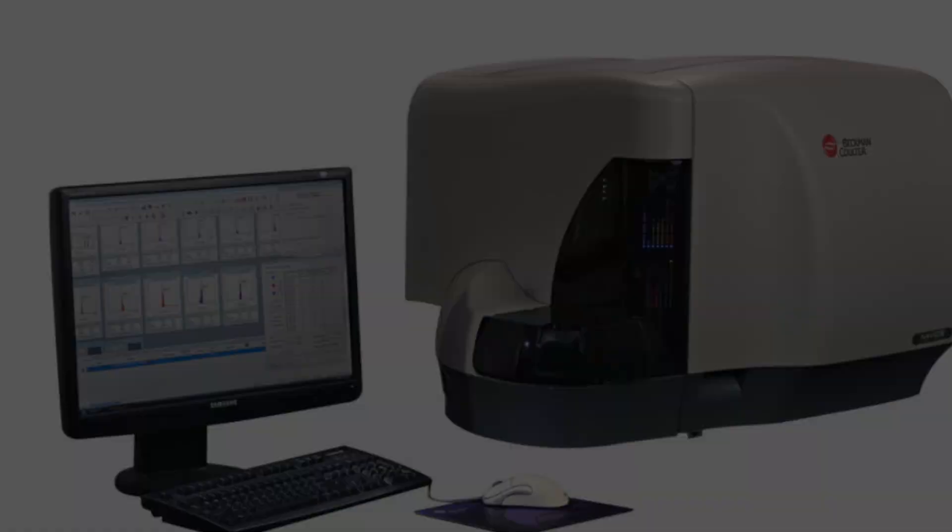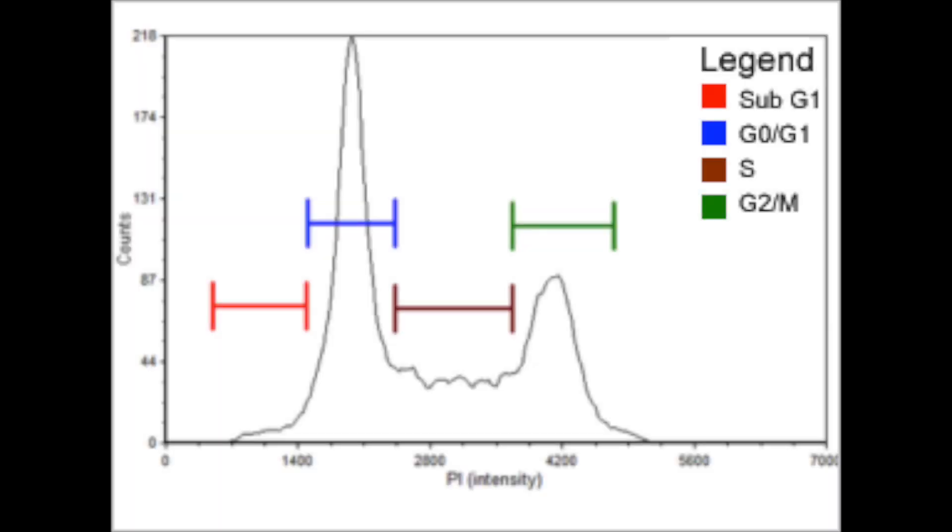After running our samples on the flow cytometer, we will have a cell population histogram in respect to PI fluorescent intensity. The amount of PI fluorescent intensity is correlated to the amount of DNA within each cell at different stages of the cell cycle. This difference in intensities can be visualized by looking at the peaks pertaining to each of the phases of the cell cycle.